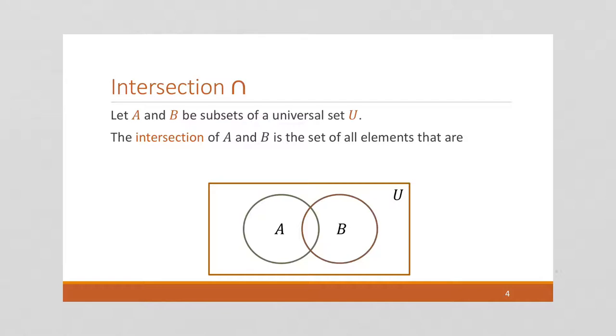Next we're going to look at intersection. Intersection is a similar symbol. It's an upside down U. Right? Once again, we have a universal background set U representing the universe. And we see the intersection of A and B is the set of all elements that are in both A and B.